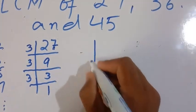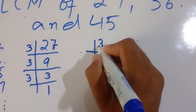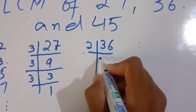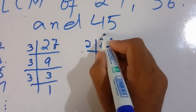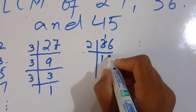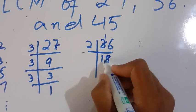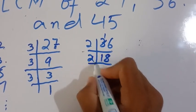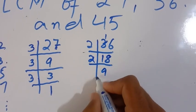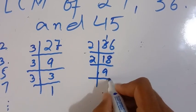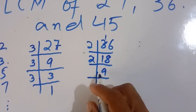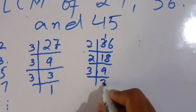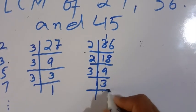Now we will find the prime factors of 36. 36 is an even number, it is divisible by 2. Dividing: 2 × 18. 18 is even, divide by 2 again: 2 × 9. 9 is odd, not divisible by 2. So 3 divides 9: 3 × 3. The prime factors of 36 are 2 × 2 × 3 × 3.